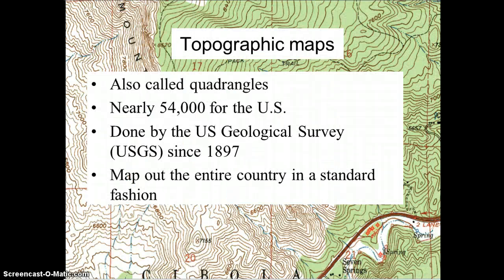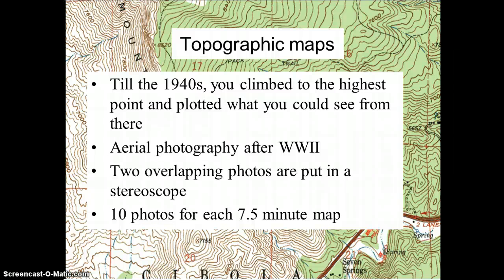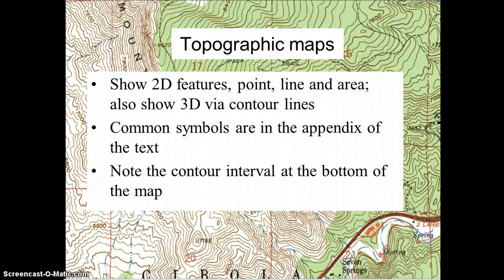Topographic maps can quite easily be seen now using Google Maps. However, the traditional maps were greatly useful for those traveling and hiking. Up to the 1940s, you climbed to the highest point and plotted what you could see from there. After World War II, aerial photography using two overlapping photos would put the terrain into a map. This would show 2D, however 3D is what is creating the lines.